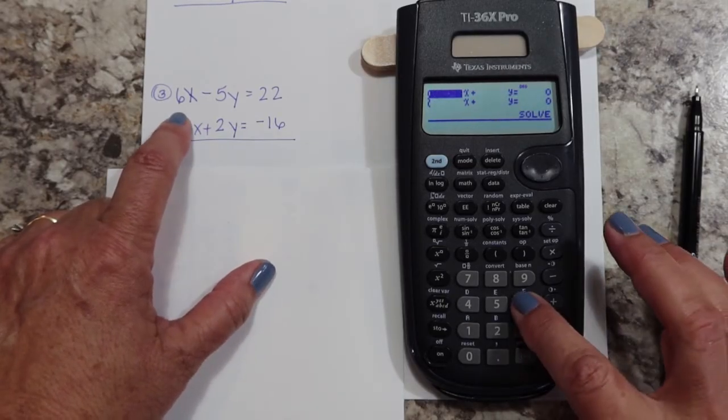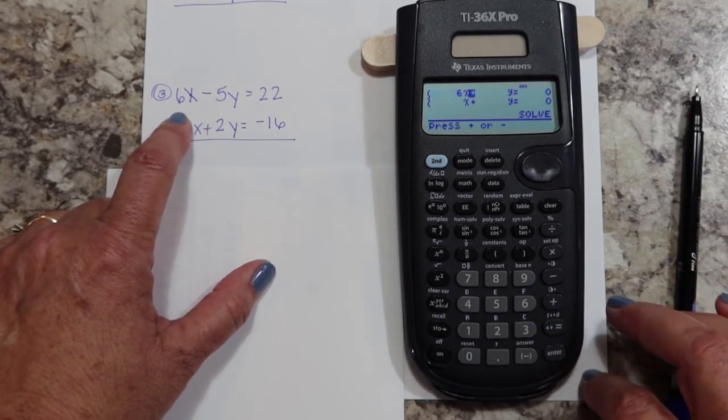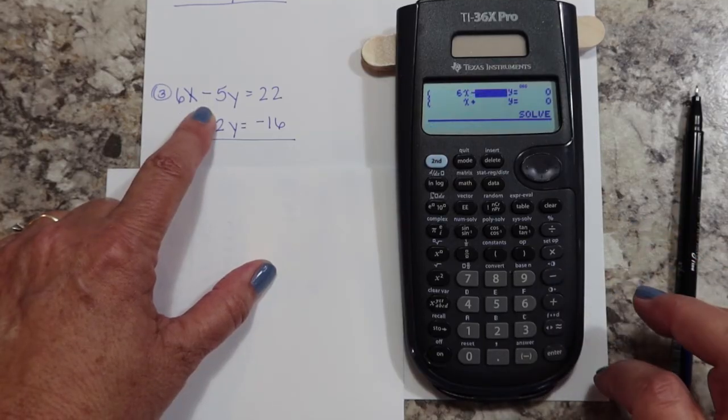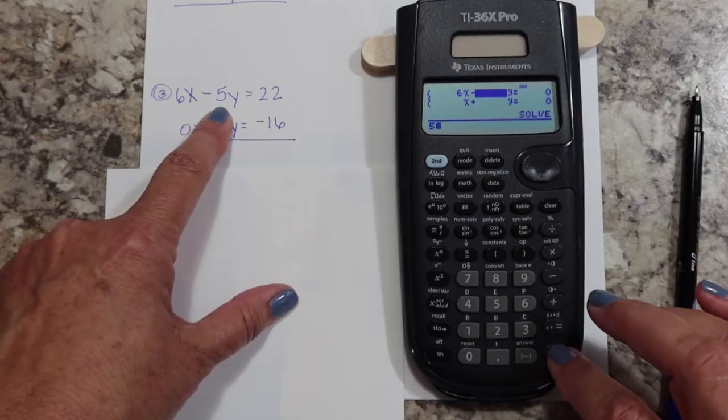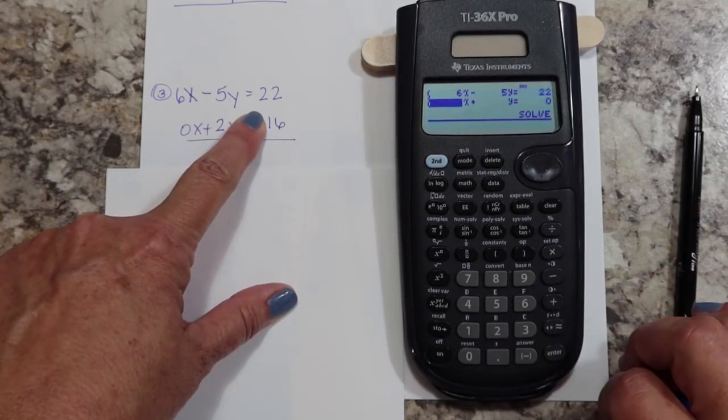The coefficient of X is six, enter. I have a minus, so I'm going to change that plus to minus. It automatically goes over to Y. Five, enter. Twenty-two, enter.